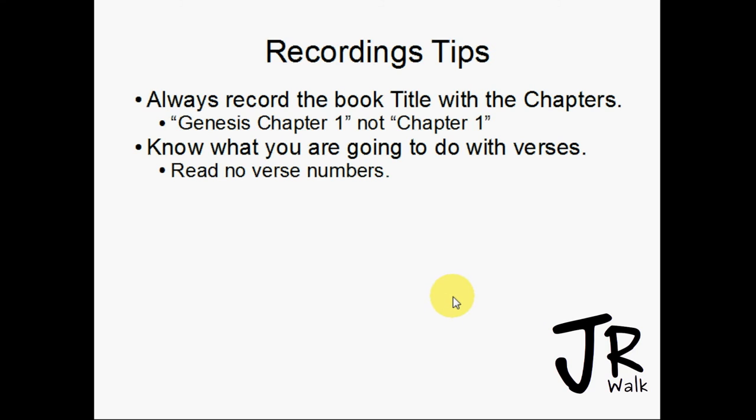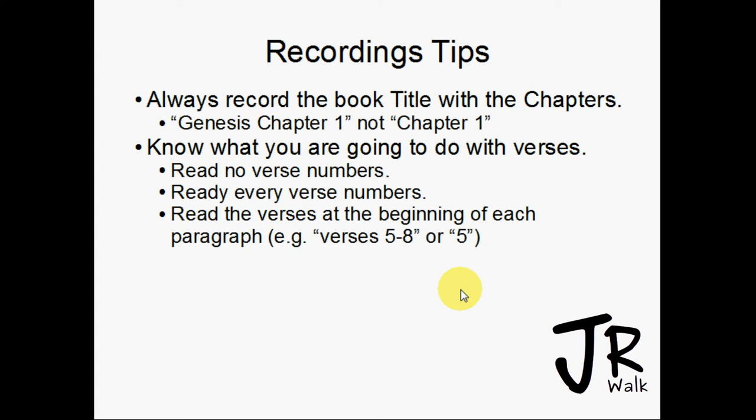Know what you're going to do with verse numbers and be consistent. Option one: read no verse numbers at all, just start reading. Option two: read every verse number — 'one... two... three...' Option three: read verse numbers at the beginning of paragraphs — 'one through four,' read, 'five through eight,' read. Or just say 'one,' read along, 'five,' read along, to help the listener know where they are.